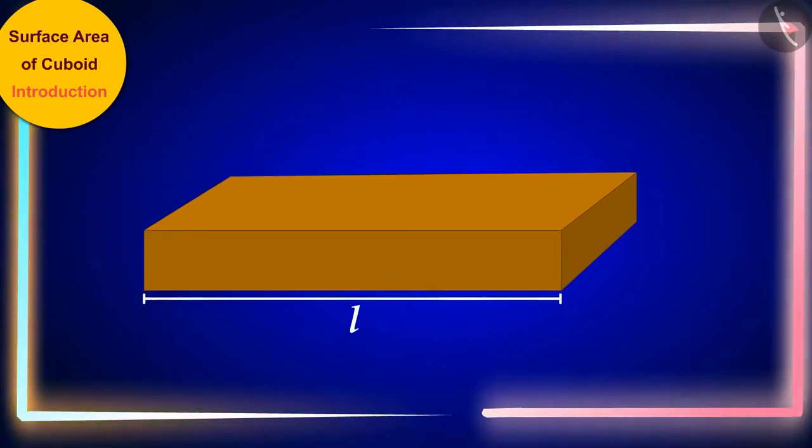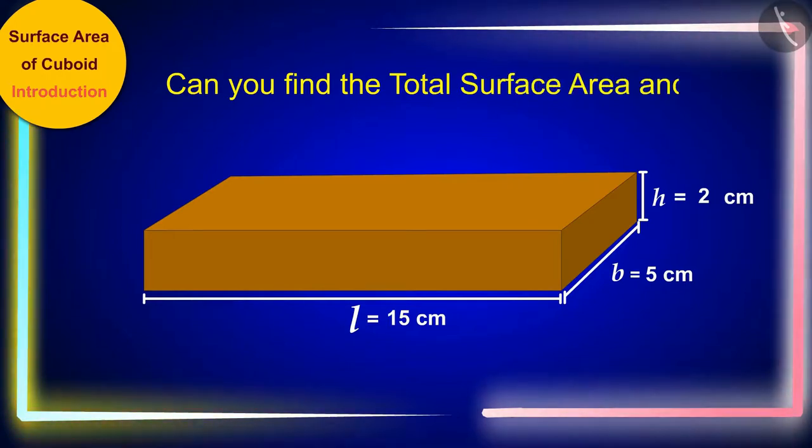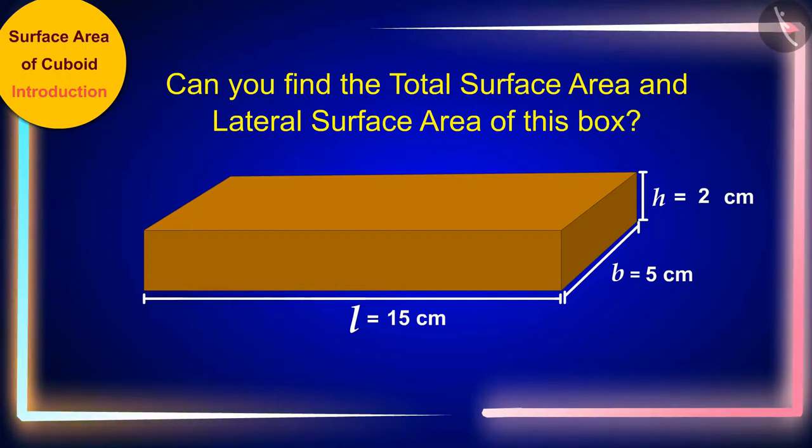Friends, if the length, width, and height of a cuboid box are 15 centimeters, 5 centimeters, and 2 centimeters respectively, then can you find the total surface area and lateral surface area of this box? We will see the solution to this question in the next video. Till then, try to find the solution to this question with your friends.